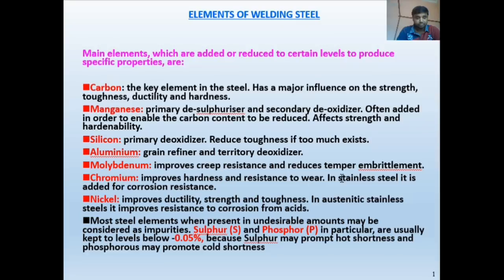Nickel improves ductility, strength, and toughness, and in standard austenitic stainless steel it improves resistance to attack from acids. Carbon, manganese, silicon, aluminum, molybdenum, chromium, and nickel — these are the main alloying elements and their roles. Elements present in undesirable amounts include sulfur and phosphorus, which are usually kept below 0.05%. Sulfur may cause hot shortness and phosphorus may cause cold shortness, both leading to weld defects.